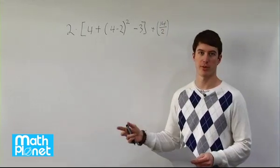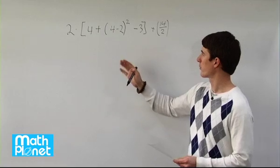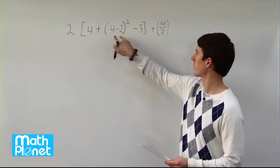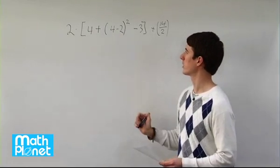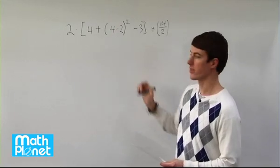We need to simplify this using order of operations. The first thing we want to do is get rid of our brackets. We have brackets here, here, and then after that here. Let's simplify what we have and then move on.